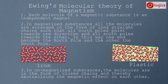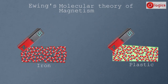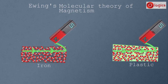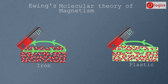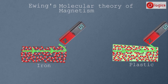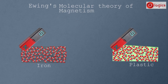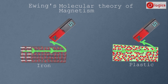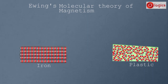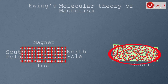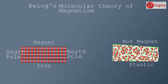By applying this theory, many properties of magnets can be explained. When we magnetize an iron bar, the molecules inside start to move and align themselves in long straight chains, and north and south poles begin to appear — iron behaves like a magnet. But in plastic, the molecules remain irregularly placed, so plastic does not become a magnet.